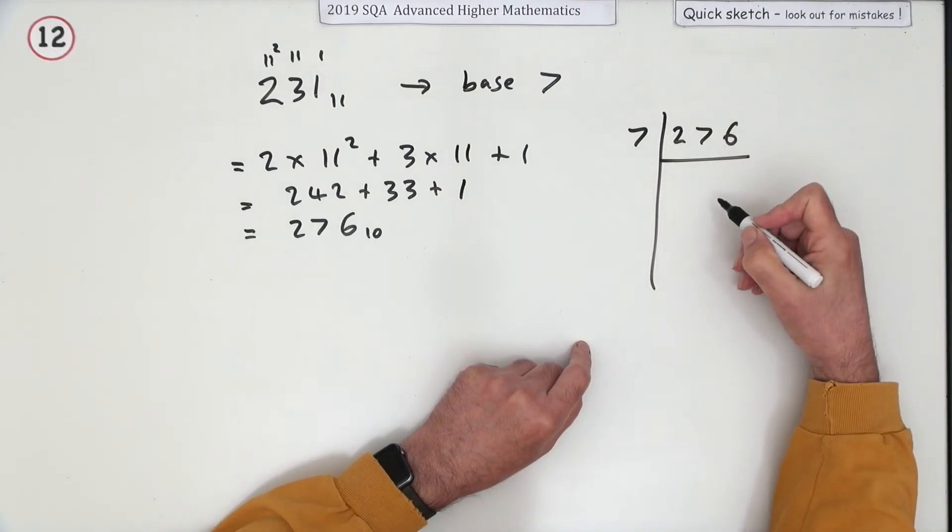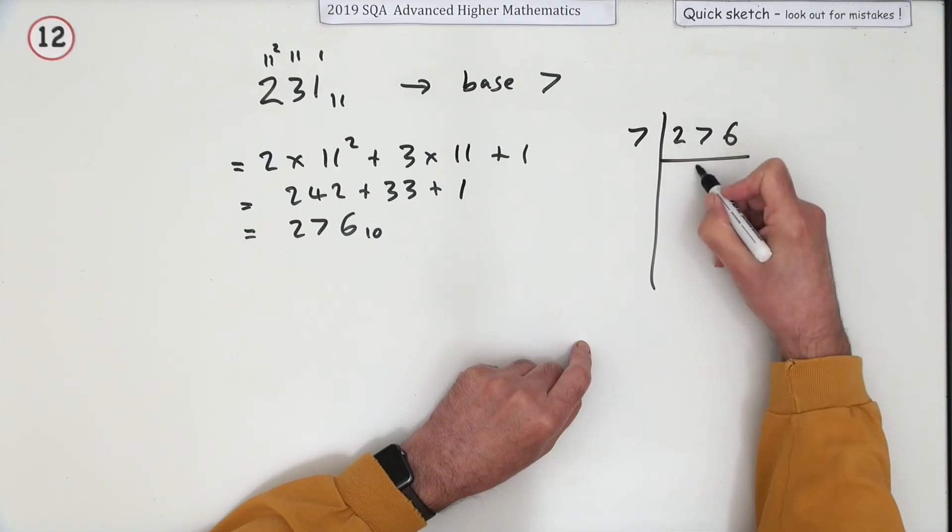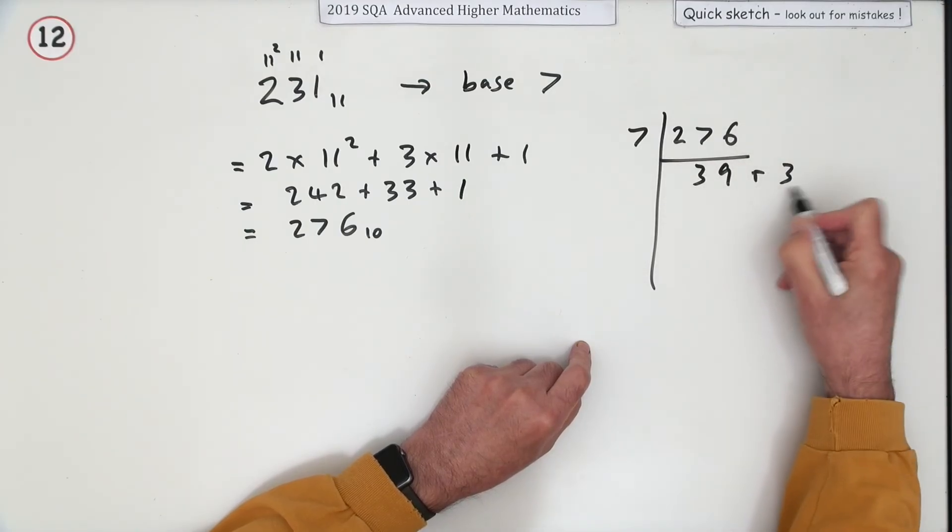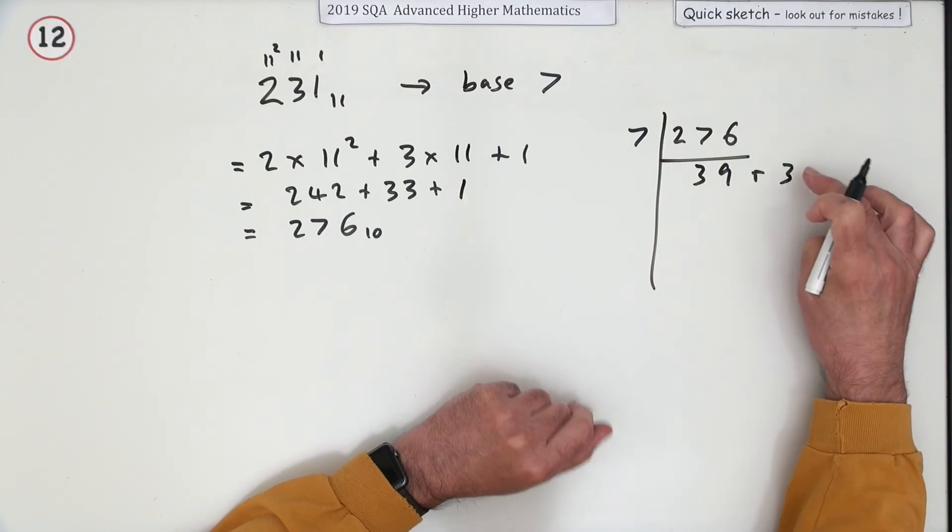Divide by 7 to see how many piles of 7 you can make. That goes in 39 times with 3 remainder. The 3 is the important bit - there's 3 that couldn't be put into a pile of 7, so that's the units.